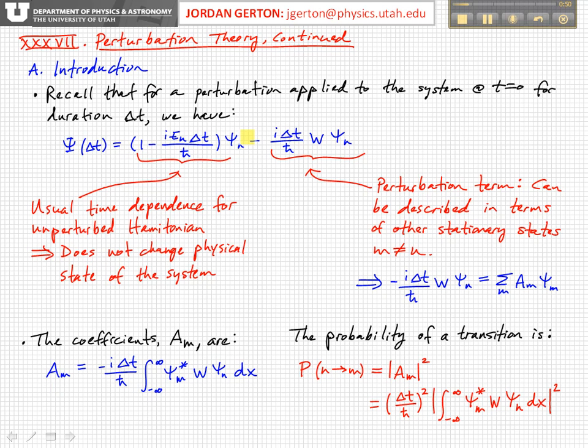Then we have that the wave function at time delta t is equal to a part which is the usual time dependence. This is the usual time dependence for the unperturbed Hamiltonian.